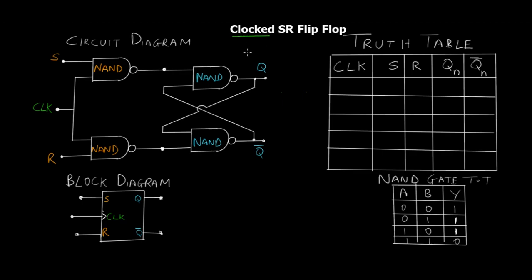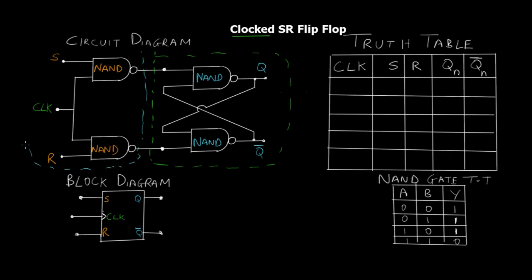We're going to understand the circuit diagram and the block diagram, and construct the truth table by taking five different cases. Now if you've already seen the SR flip-flop video, this part is the SR flip-flop and this part with the two extra NAND gates and one clock input is how we implement a clock mechanism. So we're just adding two NAND gates and giving an input of clock over here, and then this acts as a control mechanism.